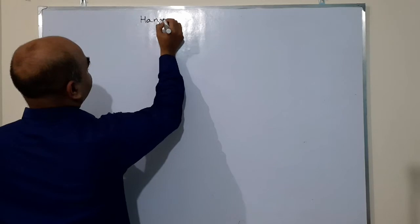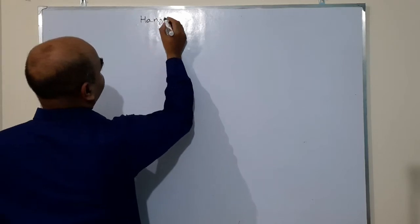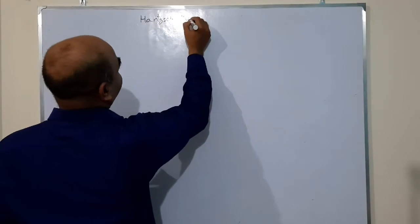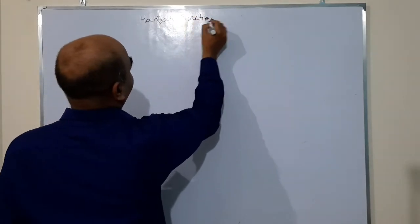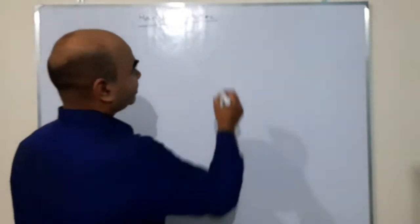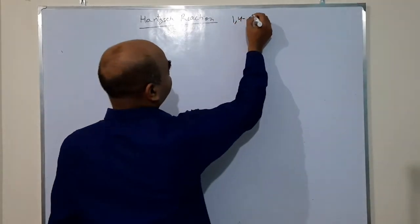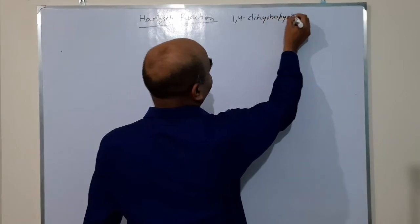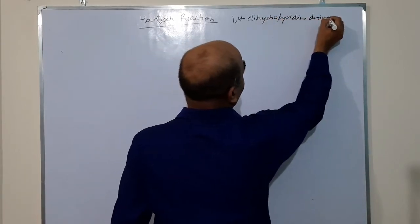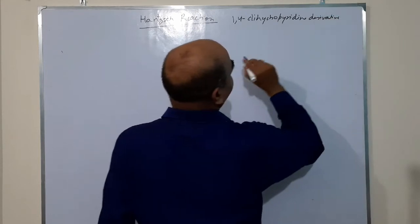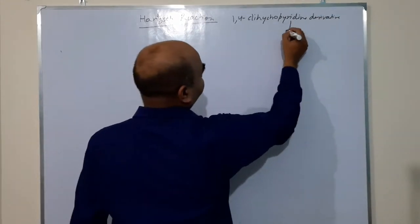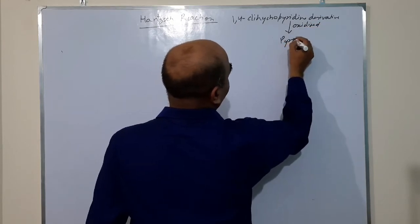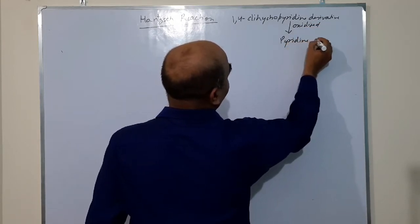So let us start the synthesis of pyridine derivatives. This is Hantzsch reaction. Usually the product of this reaction is 1,4-dihydropyridine derivative.